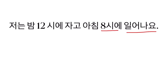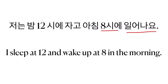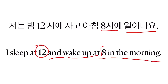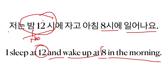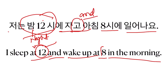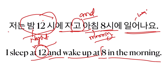Let's see the English sentence: I sleep at 12 and wake up at 8 in the morning. 저는 밤 열두 시 — bam means night. In the English version we haven't said night, but you can say at 12 in the night if you want. Jago — we have used the connector go. Achim is morning, yodol shiye ironayo — ironada means to wake up. Simple, right?